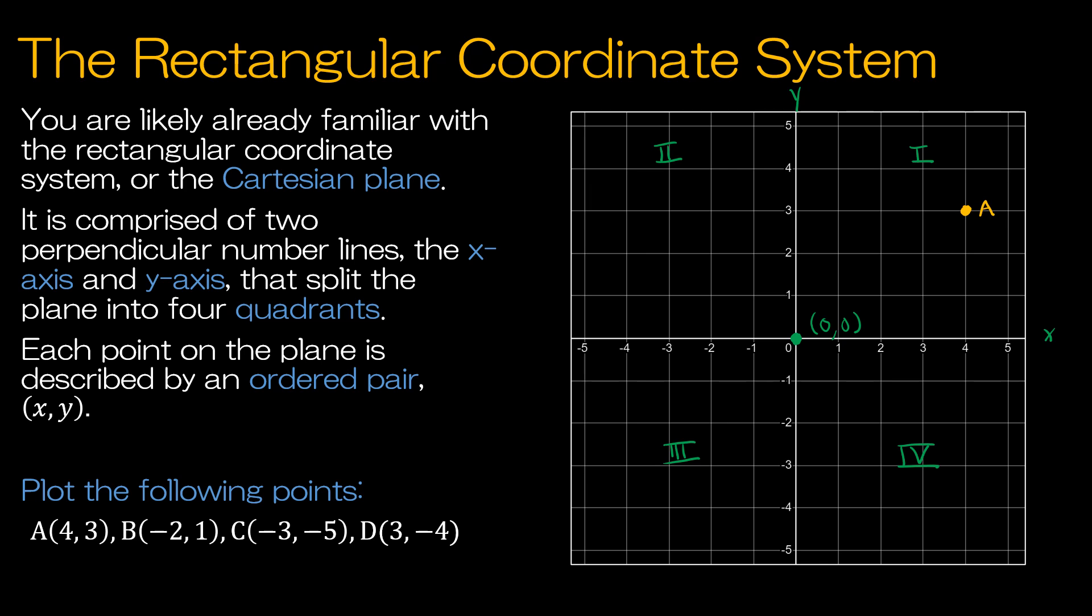So b is (-2, 1), so that would be negative 2 on the x and positive 1 on the y, so that's in the second quadrant. C is (-3, -5). Again, we're going left and right first, up and down second, and of course that's in the third quadrant. And d is (3, -4), so this is point d in the fourth quadrant.